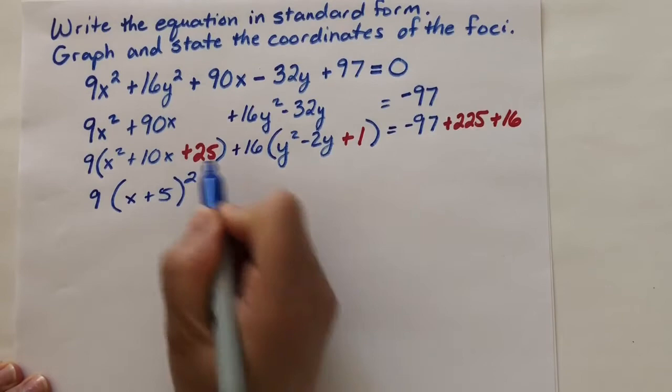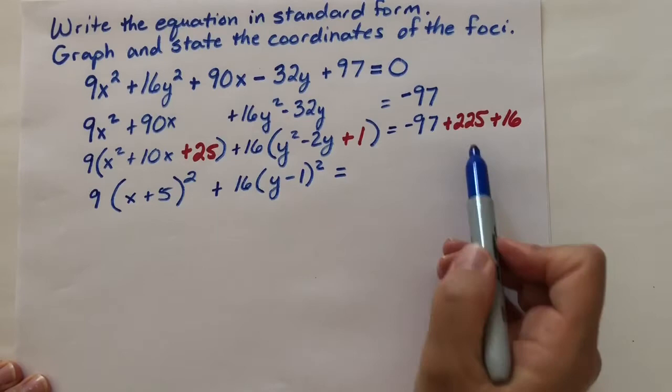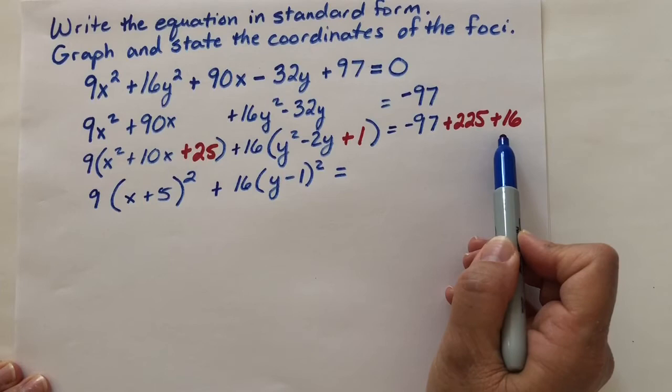Plus 16(y-1)² equals... And then we can do the arithmetic on this side. We have 225 + 16. That's 241. Subtract 97. And we have 144.